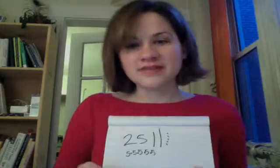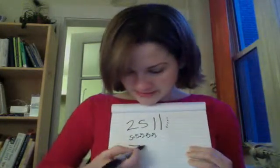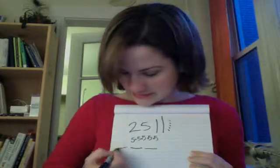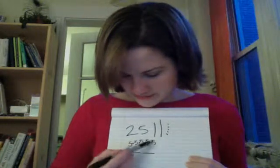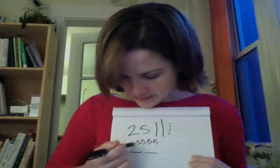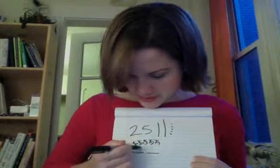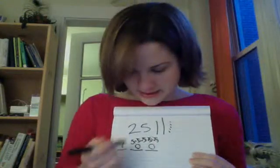And in base 5, my places are different. This isn't the 10s and the 1s place. This is the 1s place, this is the 5s place, and this is the 25s place. So I'm looking here and I'm seeing that we have one group of 25 — 5, 10, 15, 20, 25. No leftover 5s and no leftover 1s. So that's how we would write 25 in base 5.